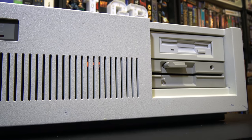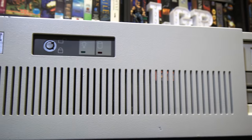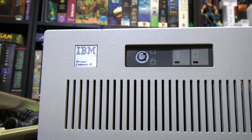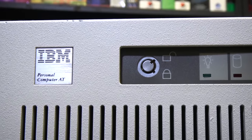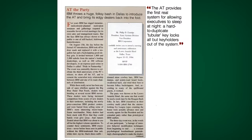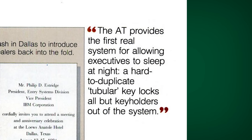The first mainstream appearance of this type of key lock was from IBM in 1984, introduced with their 5170 model, the IBM PC-AT. To quote the November 13, 1984 issue of PC Magazine: the AT provided the first real system for allowing executives to sleep at night — a hard-to-duplicate tubular key locks all but key holders out of the system.